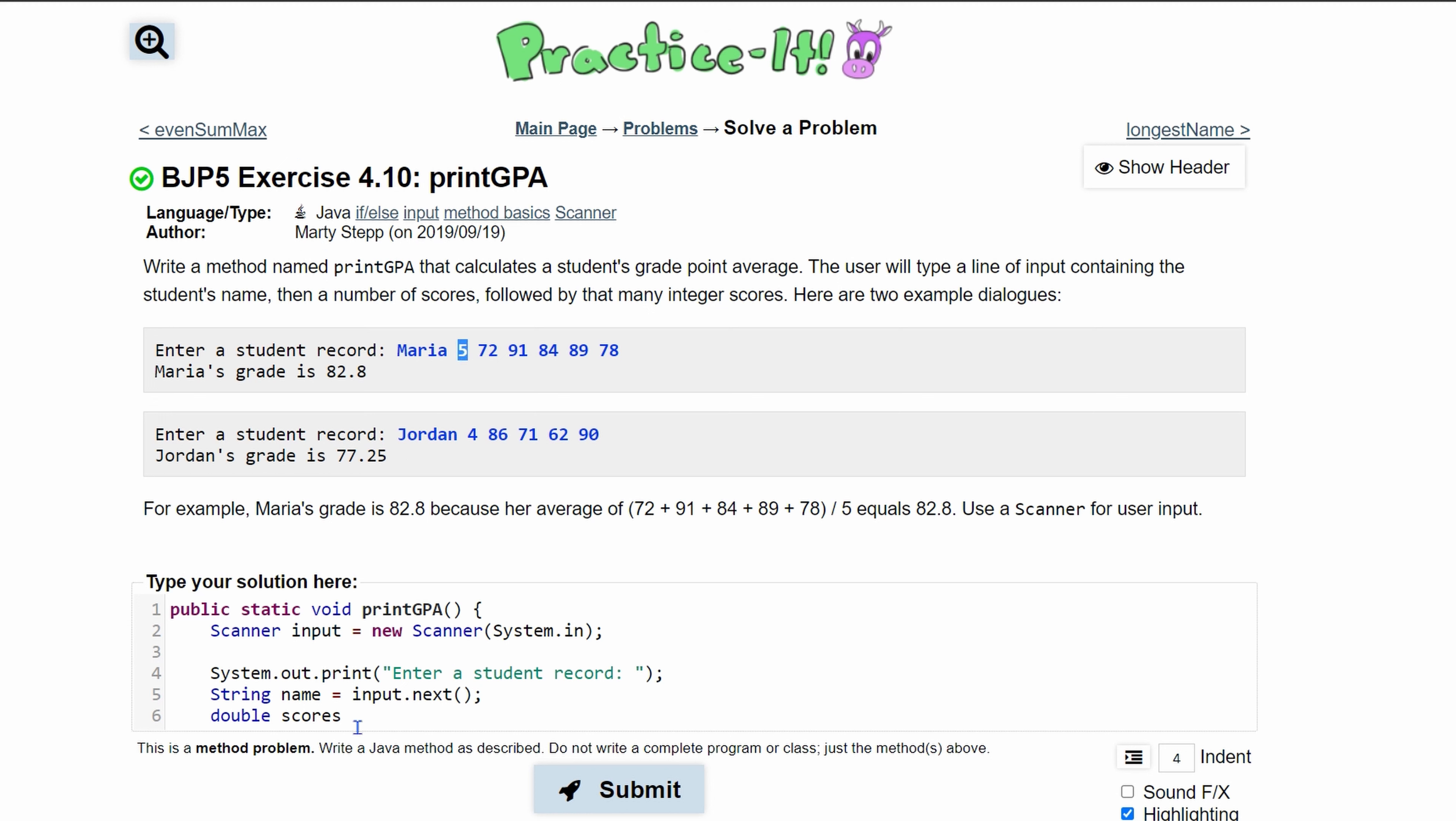That's what we're getting right here. So we have double scores and it's going to be equal to input.nextInt because an integer is going to be passed in next, not a double.